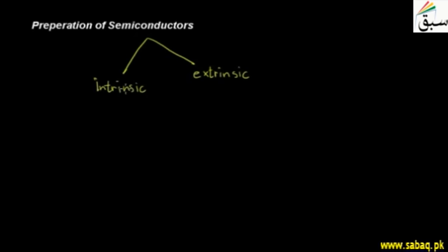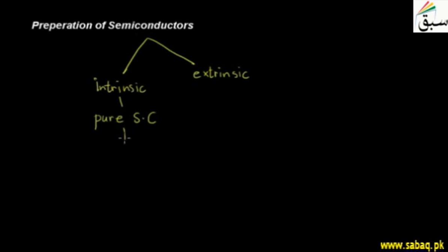Now what happens in intrinsic semiconductors? Intrinsic semiconductors are pure semiconductors. In it, we have not added anything extra. So pure semiconductor means that the elements naturally have semiconductor properties, so we don't do anything to them.